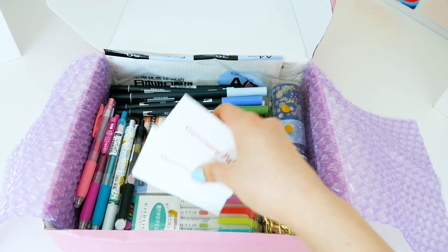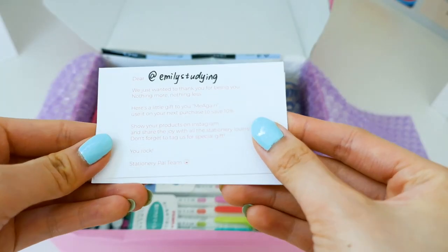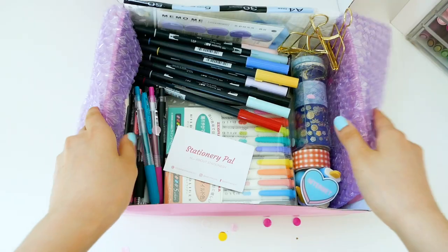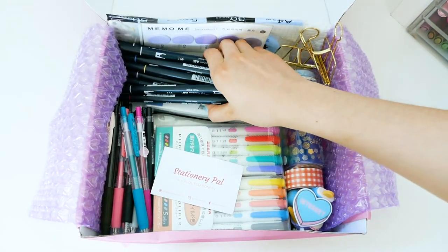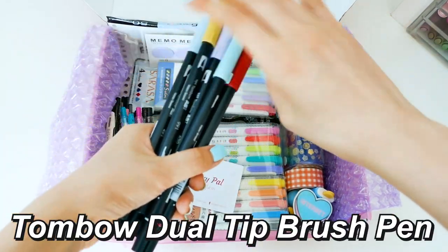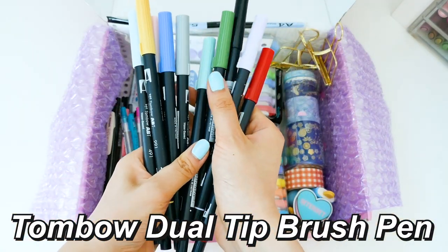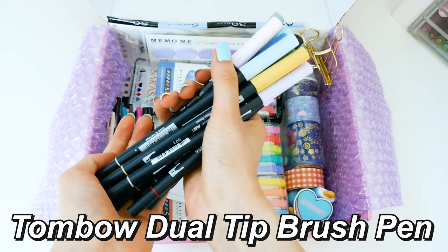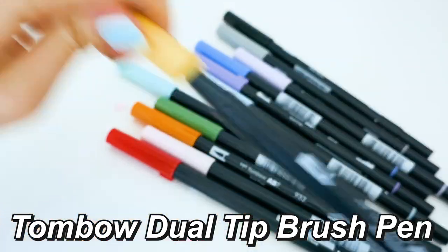In my back to school stationery haul, I also mention a lot of items so be sure to check them out. They have hundreds of Japanese stationery all at an affordable price and if you want to save yourself more money, you can use the code EMILYSTEDYING.